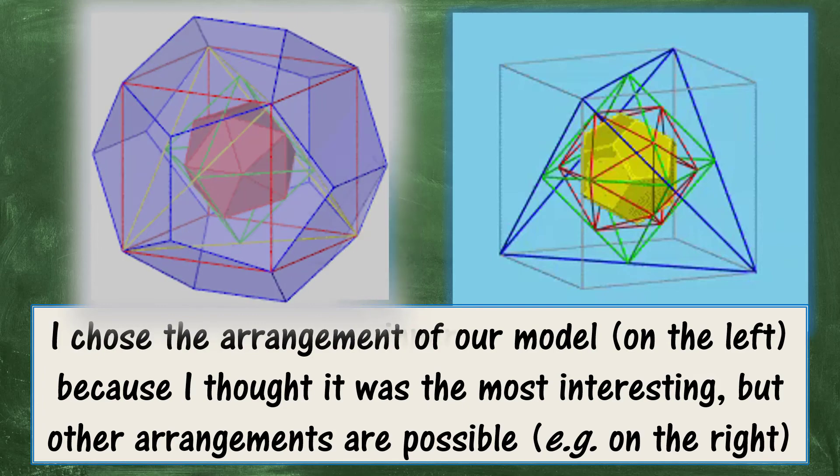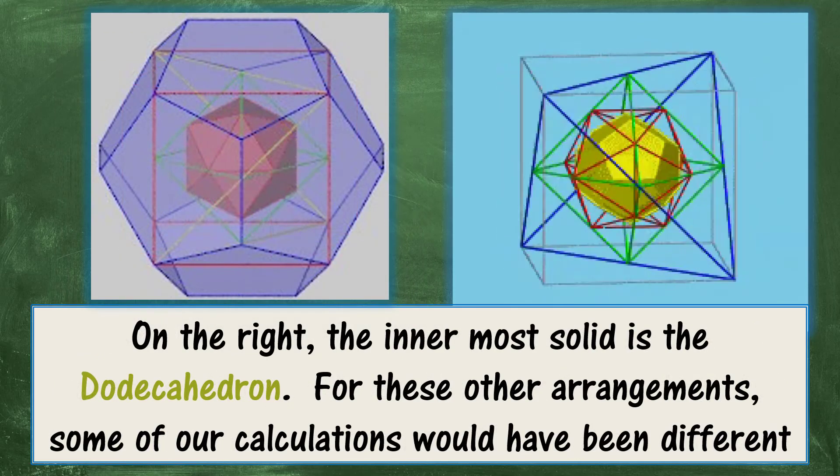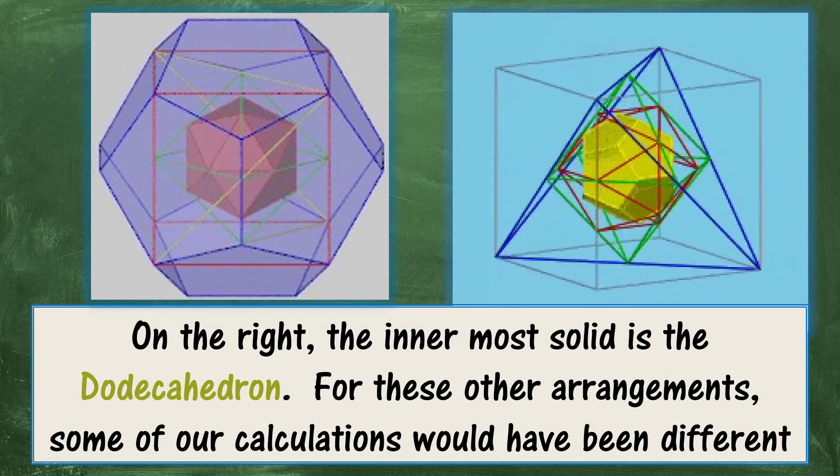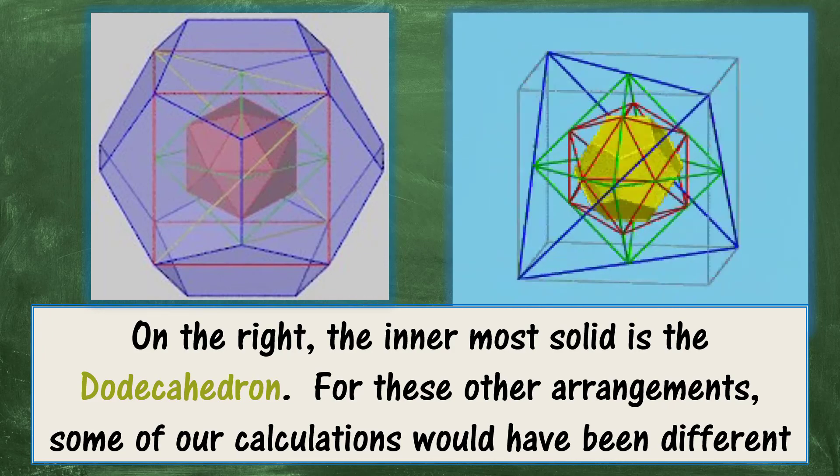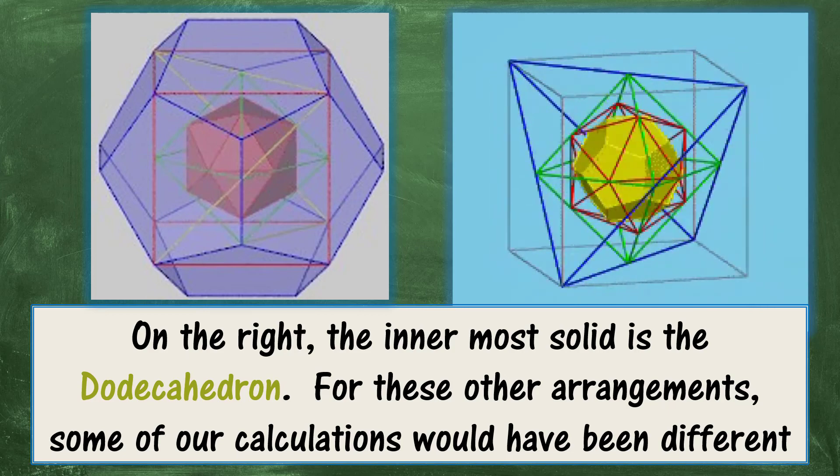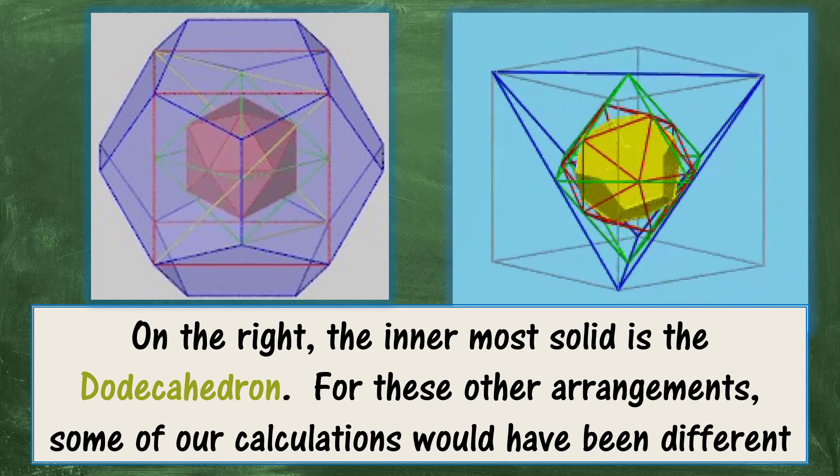But other arrangements are possible. And the one on the right begins with the dodecahedron at the centre. And then, outside that is the icosahedron, and so on.